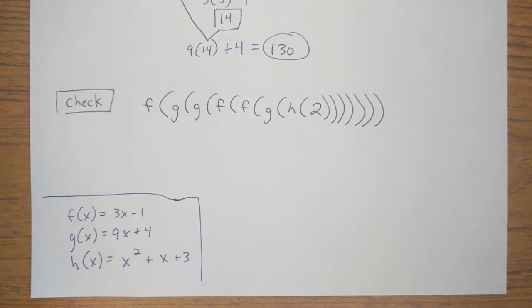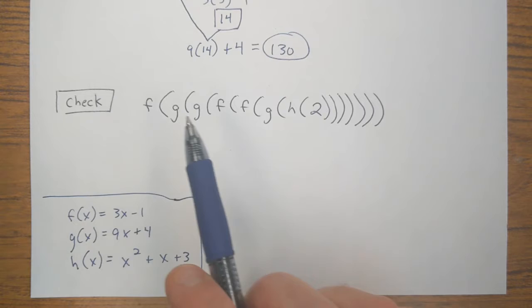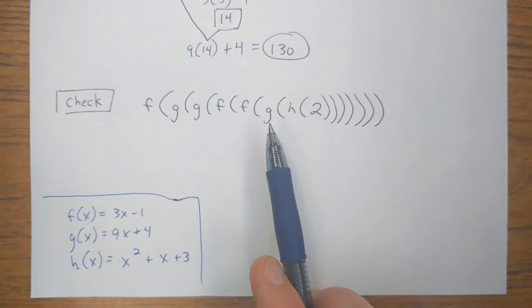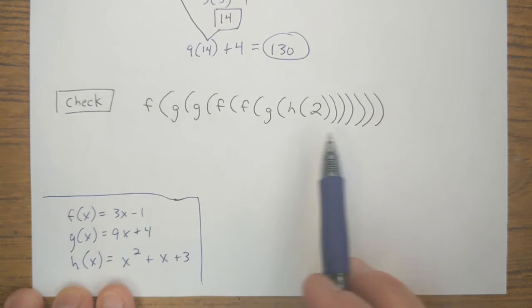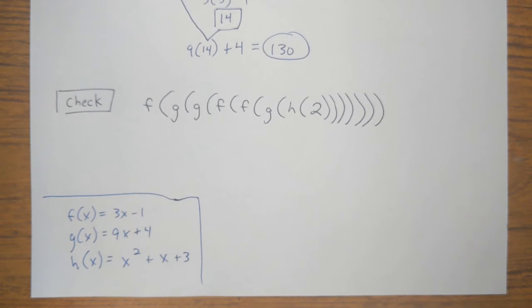Now you're going to love me for this check problem. There's no limit to a composition. With compositions of functions, you can keep putting a function inside another function, inside another function, inside another function. You can do this forever and ever if you want to. So here's a check problem. Get your calculator ready. Give this one a try on your own. Go ahead and hit pause. Try this on your own. When you hit unpause, we'll give you the answer.